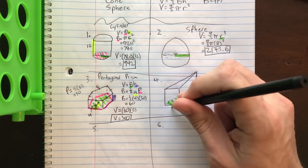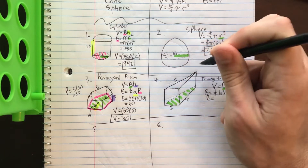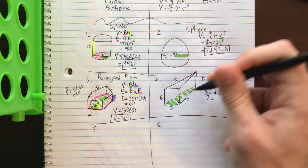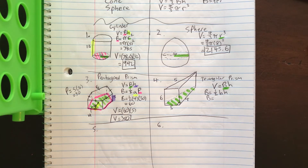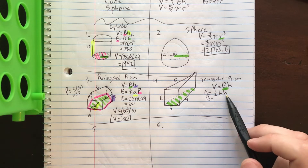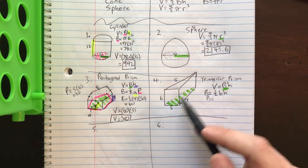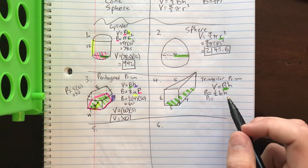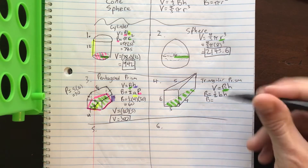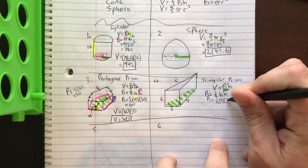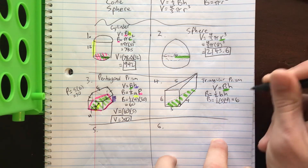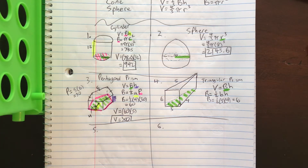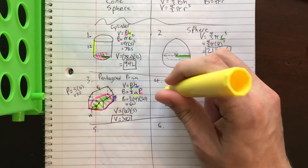What changes is what we do to find that capital B. Capital B means area of the base, and this is a triangular prism, so to find the area of the base we have to do the triangle formula: one-half base times height. Let's label the shape with a right angle. When we do one-half base times height for the triangle, we're looking at the two sides that make the right angle — those are 3 and 4.